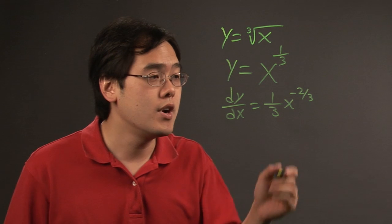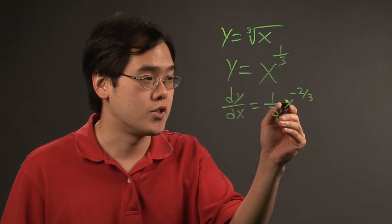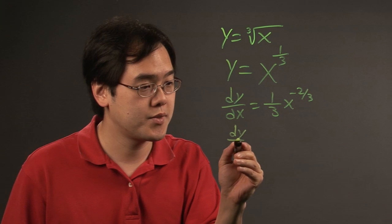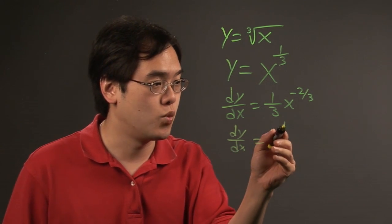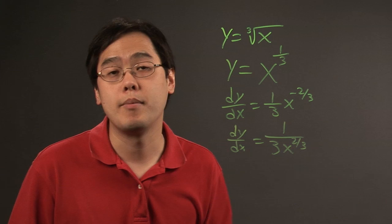Before you go any further, keep in mind that because you have a negative exponent, you're going to move this term downward. So, dy dx can be thought of as one over 3x to the two-thirds power.